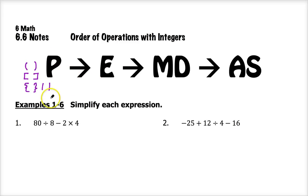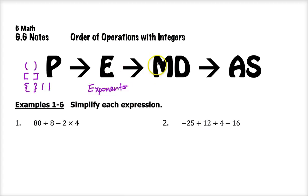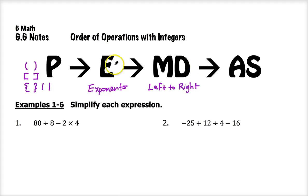Once you've done everything inside grouping symbols, the next is E which stands for exponents — go ahead and simplify those parts of your problem. After exponents it's multiplication and division from left to right. So if division comes before multiplication, do that first; if multiplication is before division, do that first. And then after you've done everything else, addition and subtraction comes last, and again that's from left to right.